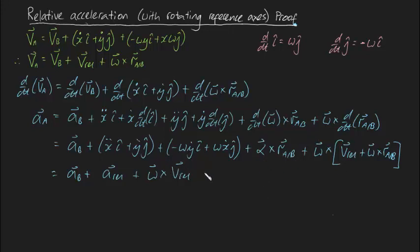And now let's look at this term right here. This will be alpha cross r_ab. And here we will have, okay, this splits into two separate terms. This will be omega cross omega cross r_ab, like that. Wonderful.